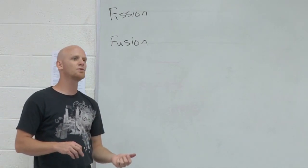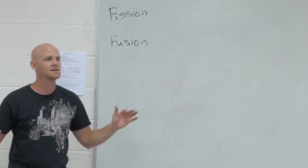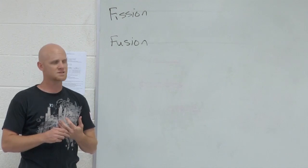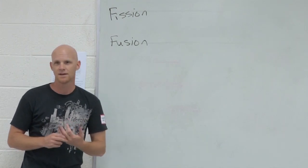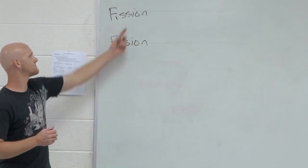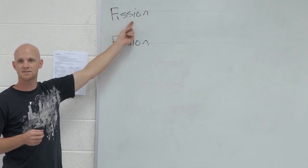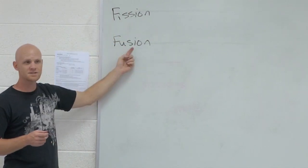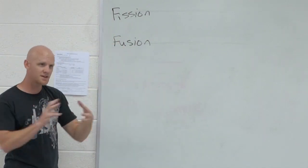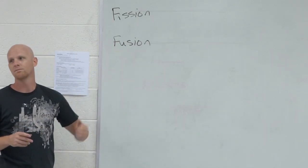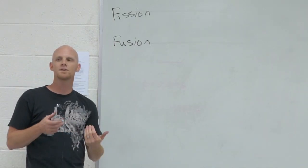And the idea is this. The most stable nucleus that exists is iron 56. If you're heavier than iron 56, then let's split you apart to get you closer to 56. If you're lighter than 56, then let's fuse you together to get you closer to 56. Again, attempt to get more stable.